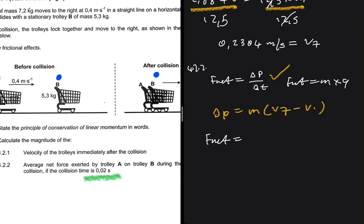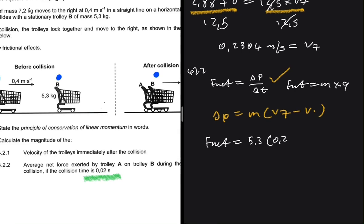So F net will be equals to the mass. Let's use trolley B. You can use trolley A, you're going to get the same thing. If we use trolley B, we're going to get the mass being 5.3, and then VF is 0.2304. And then it's coming from rest, so its VI must be 0. And we're dividing all that by 0.02, that is the amount of time the collision took.